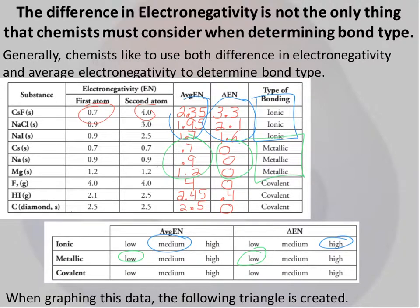And then lastly, if you're looking at covalent, covalent has a low change but a high average. So those are the different characteristics that we're going to look at.